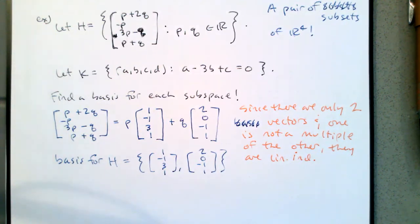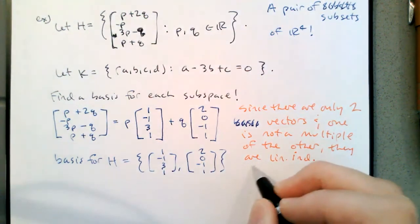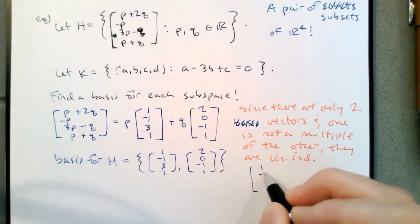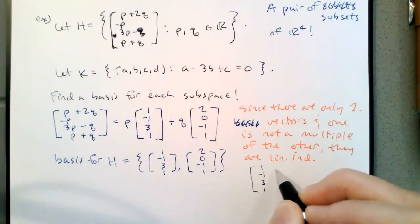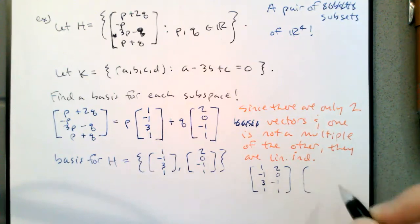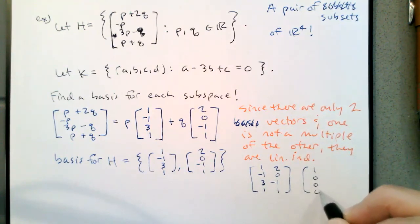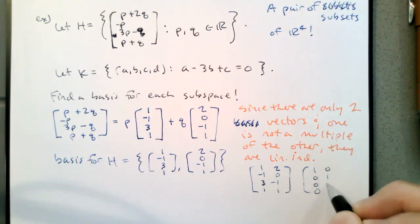Because the only linear combination of one vector is a scalar multiple. If we wanted to verify this, we would drop these vectors into a matrix: 1, negative 1, 3, 1 as the first column and 2, 0, negative 1, 1 as the second column. We would find that there's a pivot in the first row, first column, and a pivot in the second row, second column.